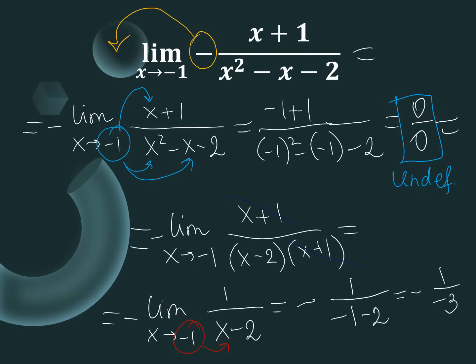We have minus 1 over negative 3. Minus times minus gives us plus, so the correct answer is 1 third for this example.